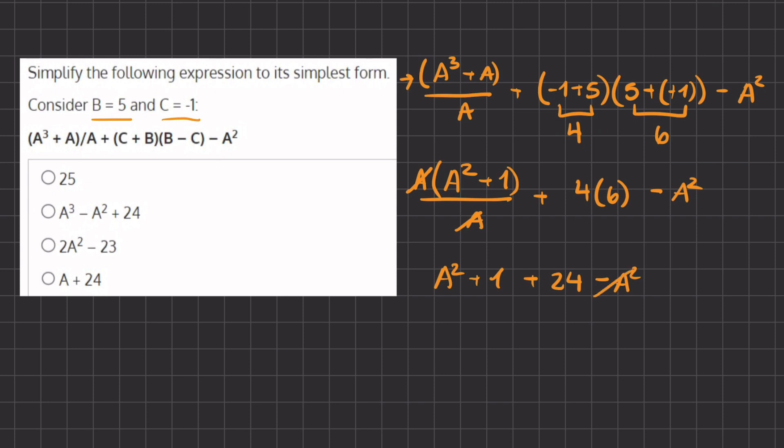Now as you can tell, we can cancel out these two A squareds, and we are left with 1 plus 24, which gives us 25. So 25 will be our final answer, and that is answer A.